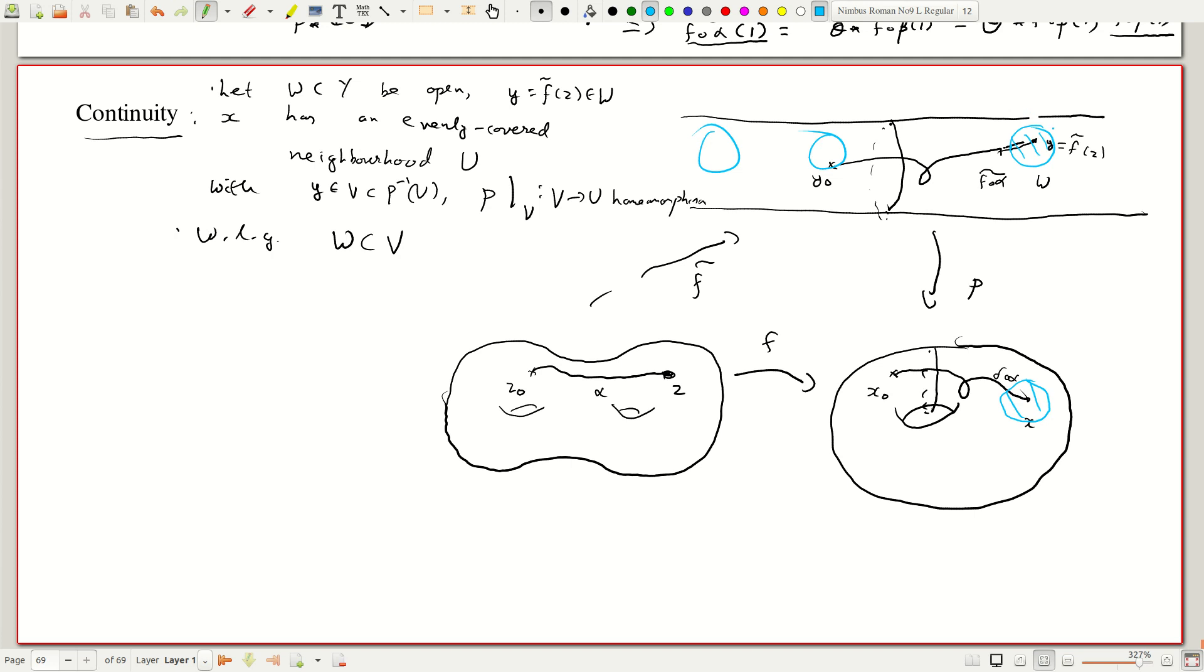And that is v, this is u. Inside that evenly covered neighborhood we have a teeny-weeny neighborhood which is w.